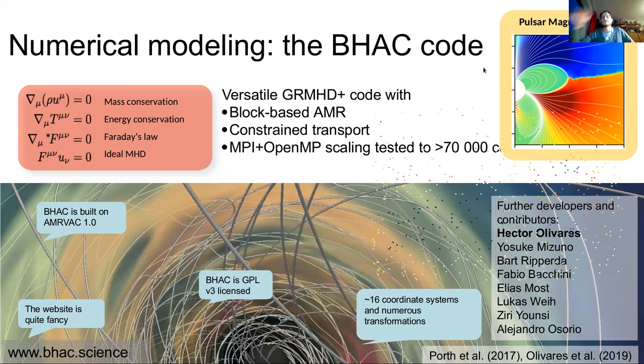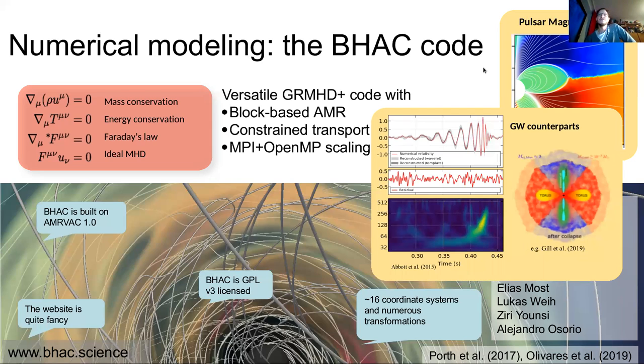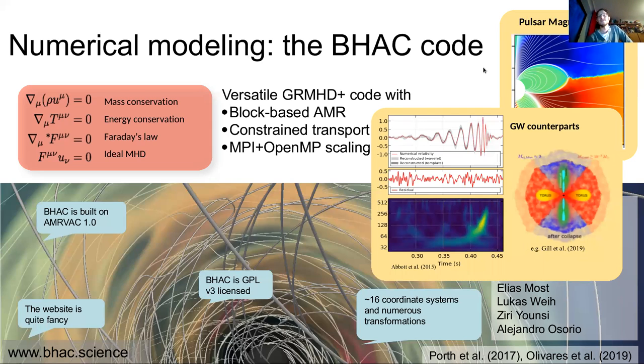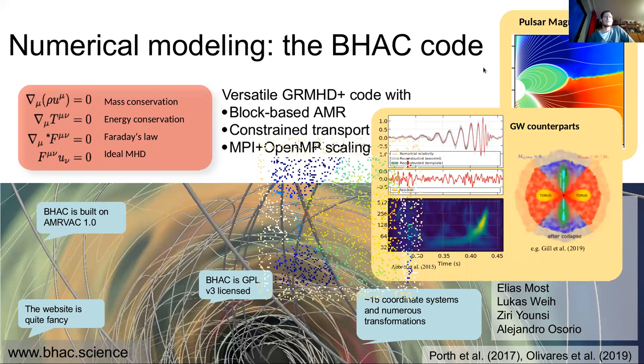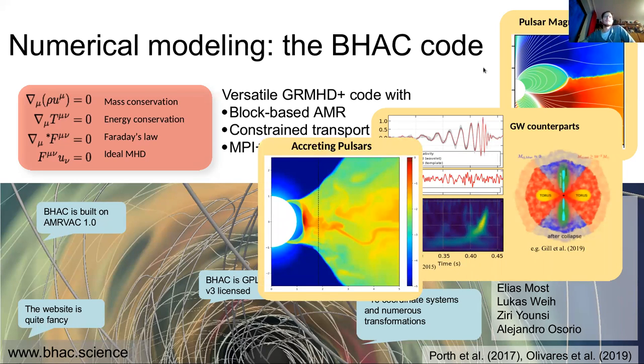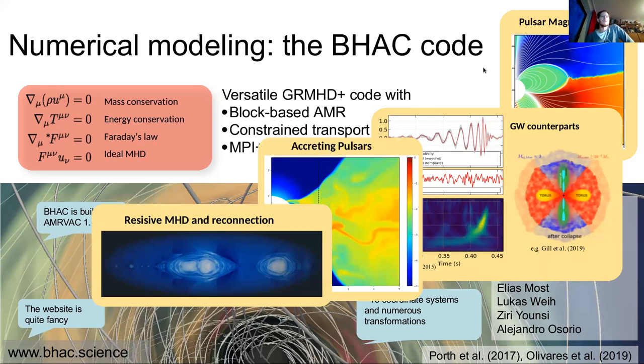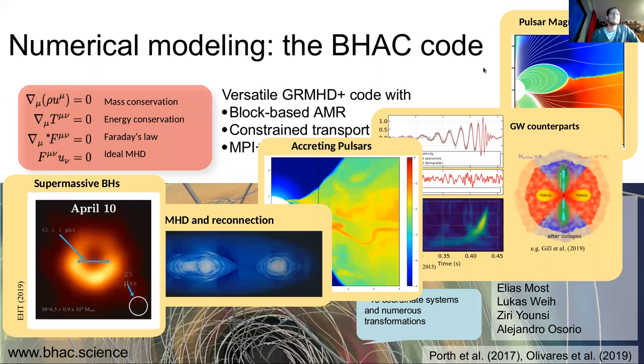We're not only doing black hole accretion with it. So we can do force-free magnetospheres. This is a quadrupole-dipole magnetosphere. So inspired by some pulsar results where you have non-standard dipole magnetospheres. Starting to look into more interesting magnetospheres now using force-free dynamics. Of course, Tony is in the audience. He's using this to do gravitational wave counterpart modeling. And we're starting to venture into creating pulsars, do resistive MHD and the connection. Now, of course, the whole thing was built to model supermassive black holes.